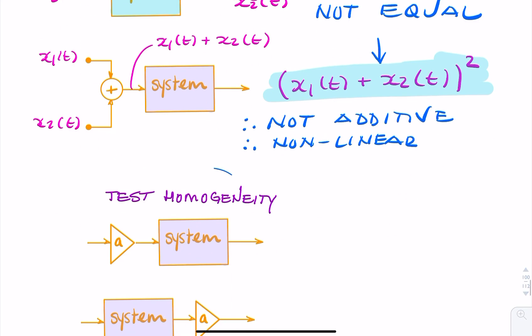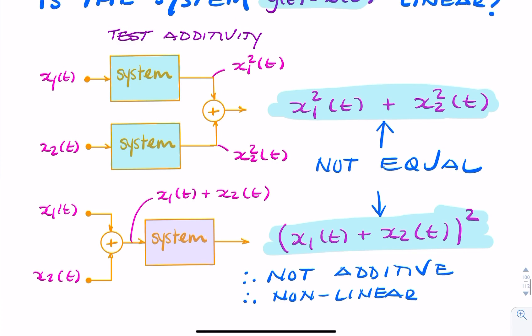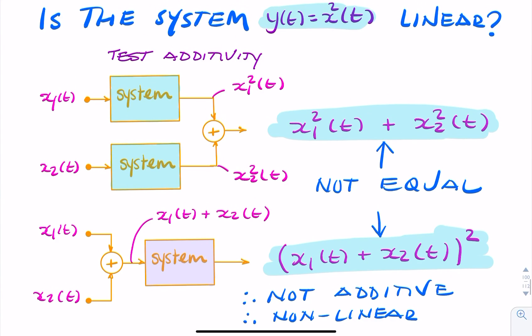We don't need to do the test of homogeneity because the system has already failed the test of additivity. So if it's not additive, it cannot be linear.